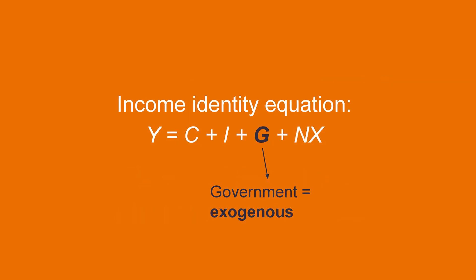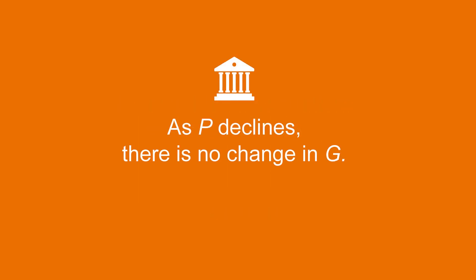The next component of income is government expenditure G. Typically, in simple macro models, we treat G as exogenous, meaning that we assume the government decides on a value for G and their decision is not related to other macro variables like prices. So this makes our analysis very easy. There is no relationship between P and G. As P declines, there is no change in government expenditure G.